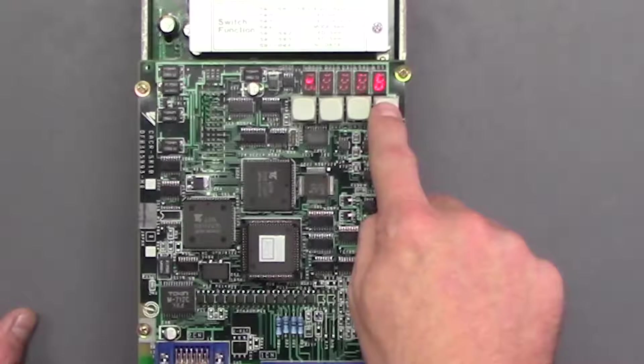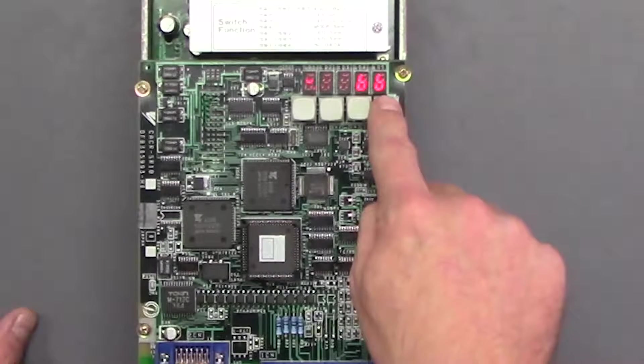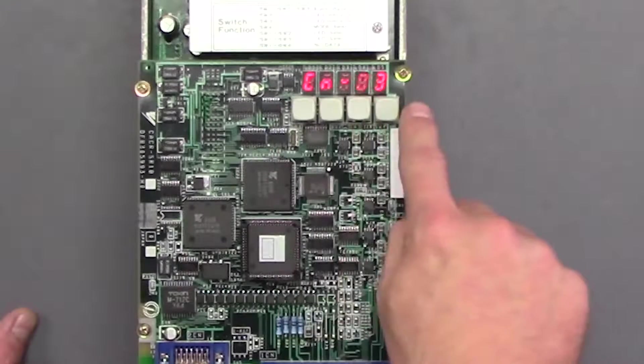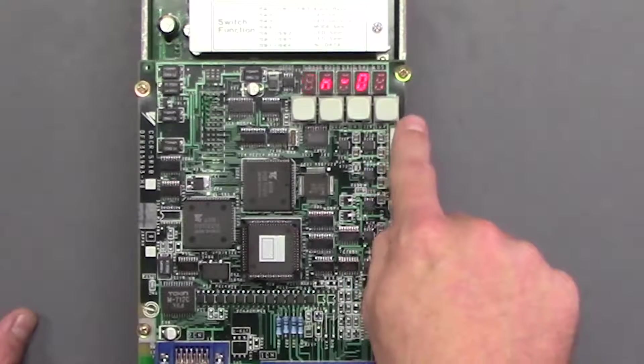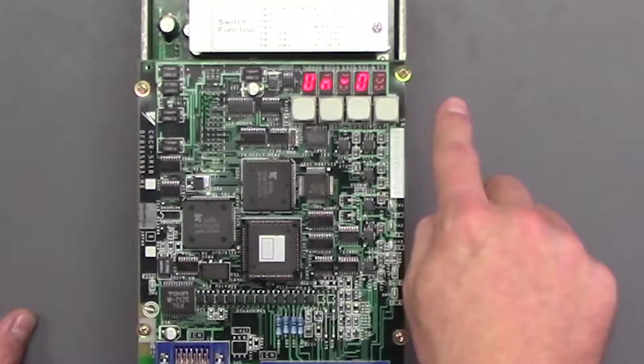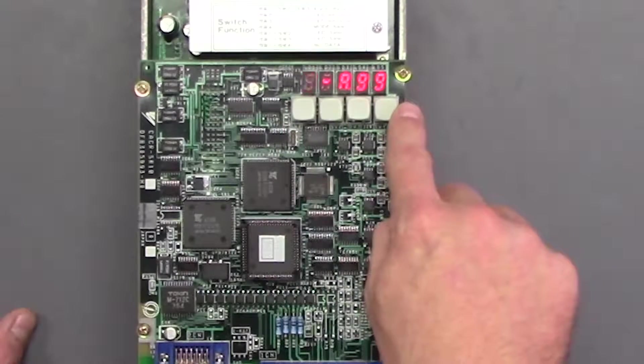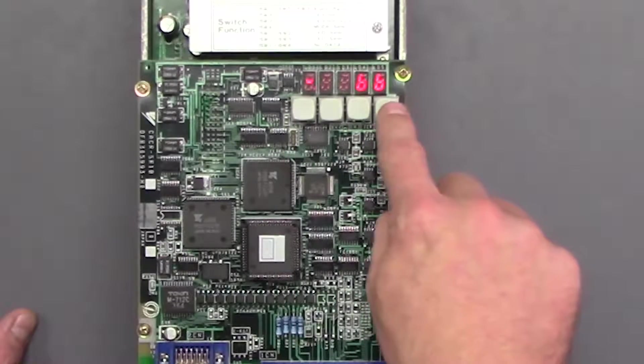To press the force switch is to move between the modes. So if we press that now we can access the CN parameters, press switch 4 again and now we can get into the UN monitoring, press 4 again and now we're in the alarm history. So we press one more time and we're back to the status mode.